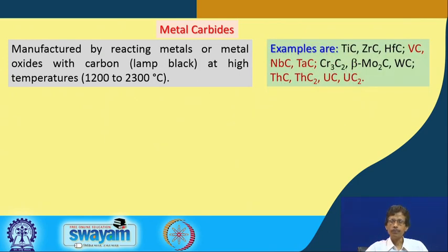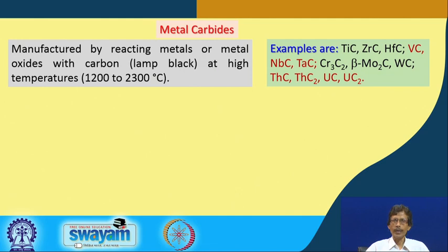The metal carbides we can have typically include those from the groups of titanium, zirconium, and hafnium; vanadium, niobium, and tantalum — subgroups 14, 15, and 16 — along with thorium and uranium. Starting from titanium carbide to uranium carbide, there are plenty of useful carbides for different applications.